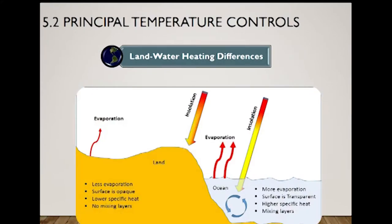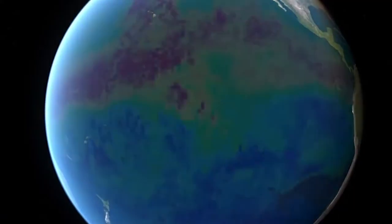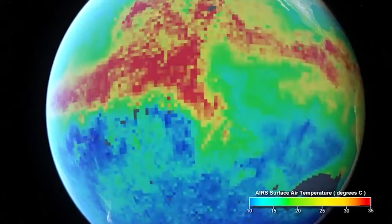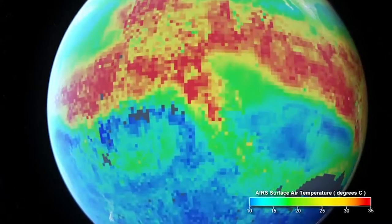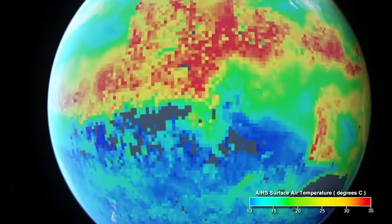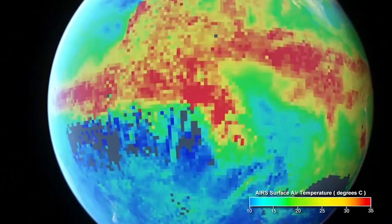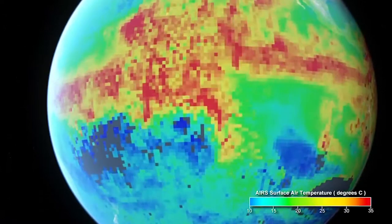Specific heat capacity means water has a higher heat capacity than land. It takes more heat to raise the temperature of one gram of water by one degree than to raise the temperature of land. One calorie of solar energy will warm one gram of water by one degree Celsius, while the same calorie would raise the temperature of one gram of granite by more than five degrees Celsius. You can feel this difference walking on grass versus concrete or asphalt.